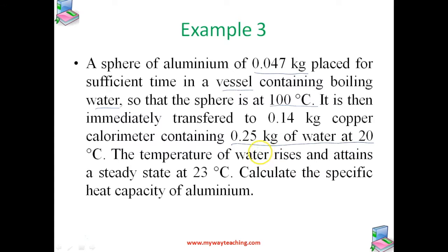The temperature of water rises because the aluminum sphere is at high temperature, that is 100 degree Celsius. Whenever a hot body comes in contact with a cold body, heat is lost from the hot body and gained by the cold body. The temperature in the calorimeter rises and attains a steady state at 23 degree Celsius. Calculate the specific heat capacity of aluminum.